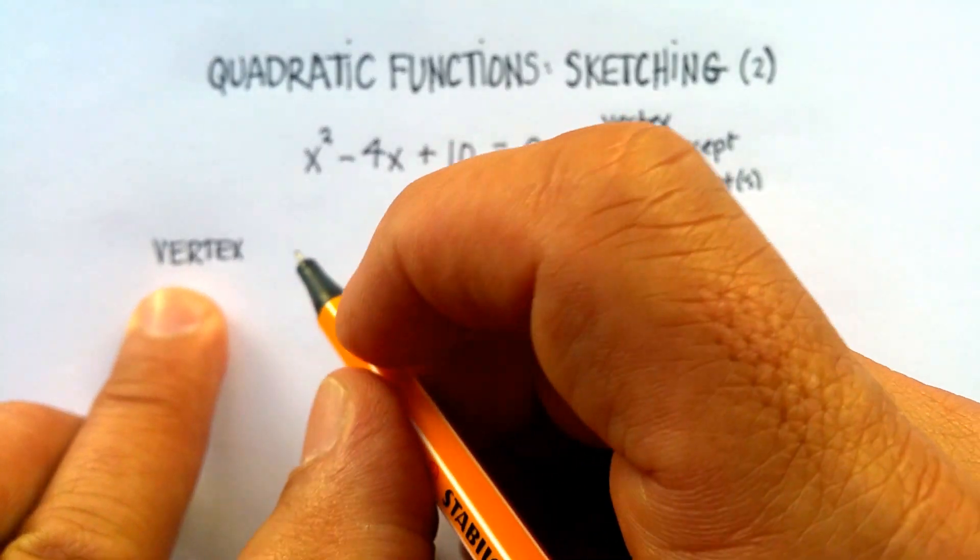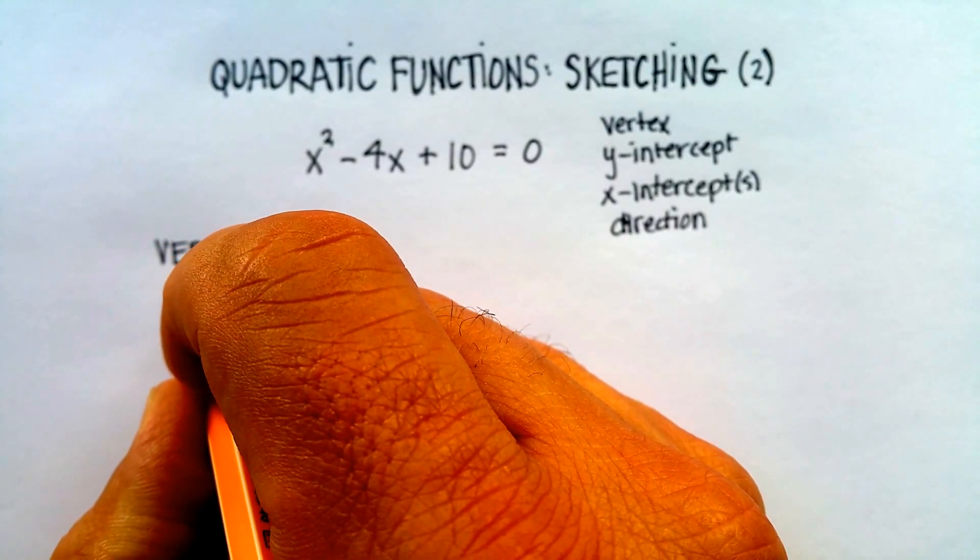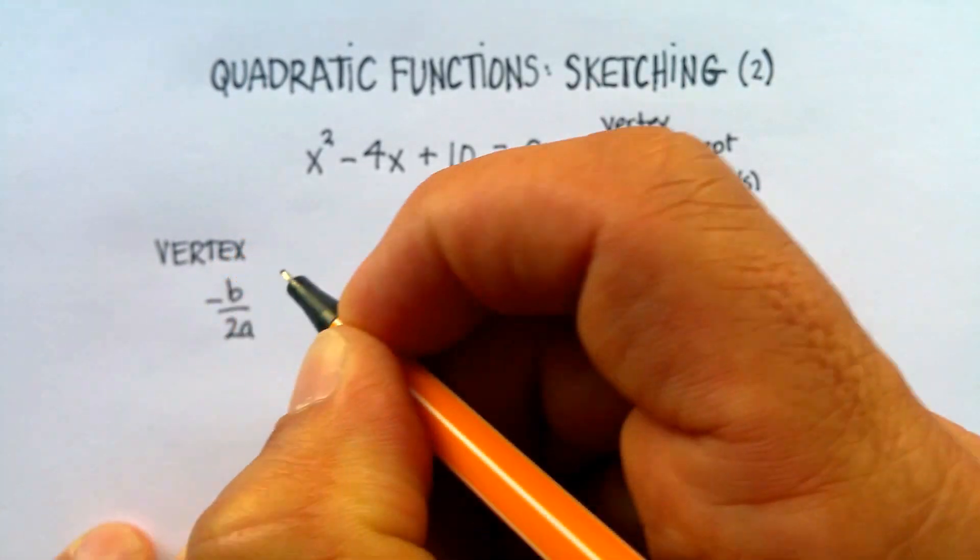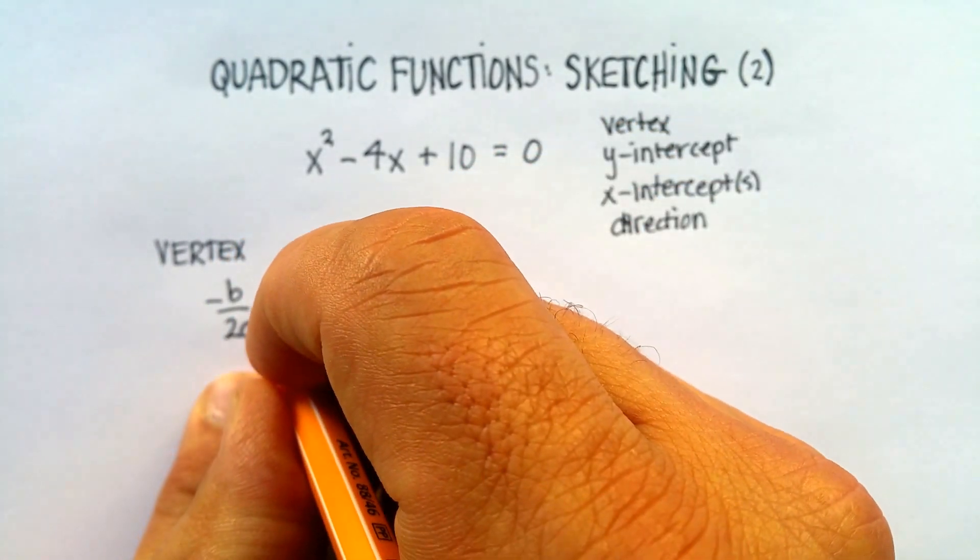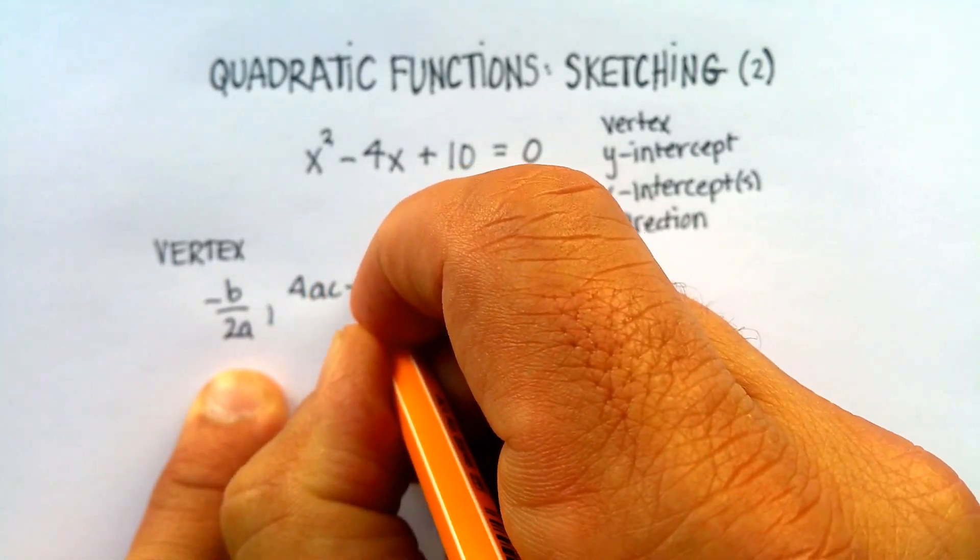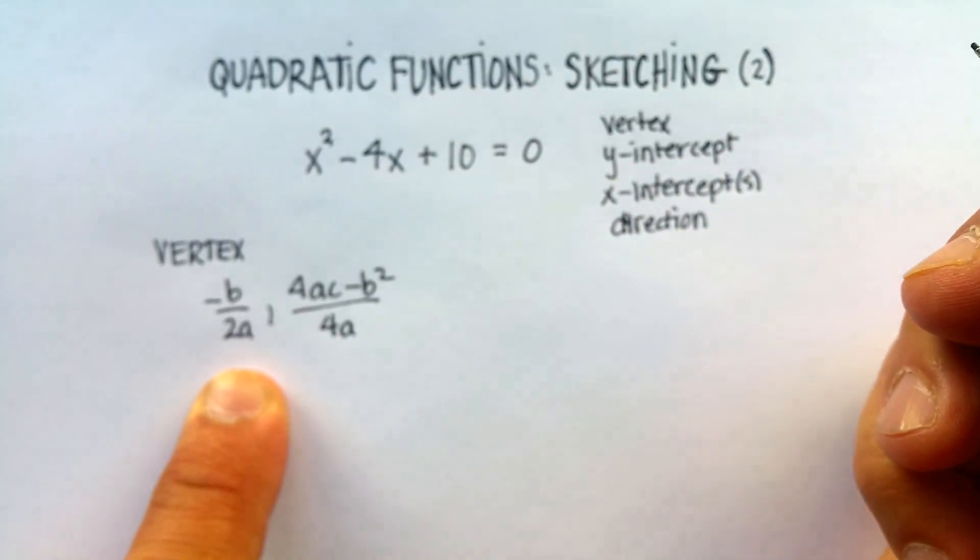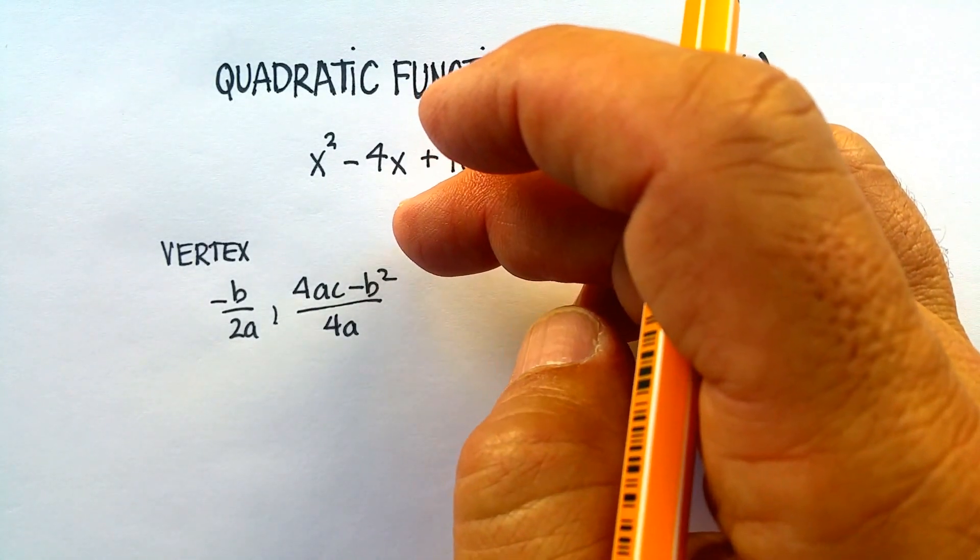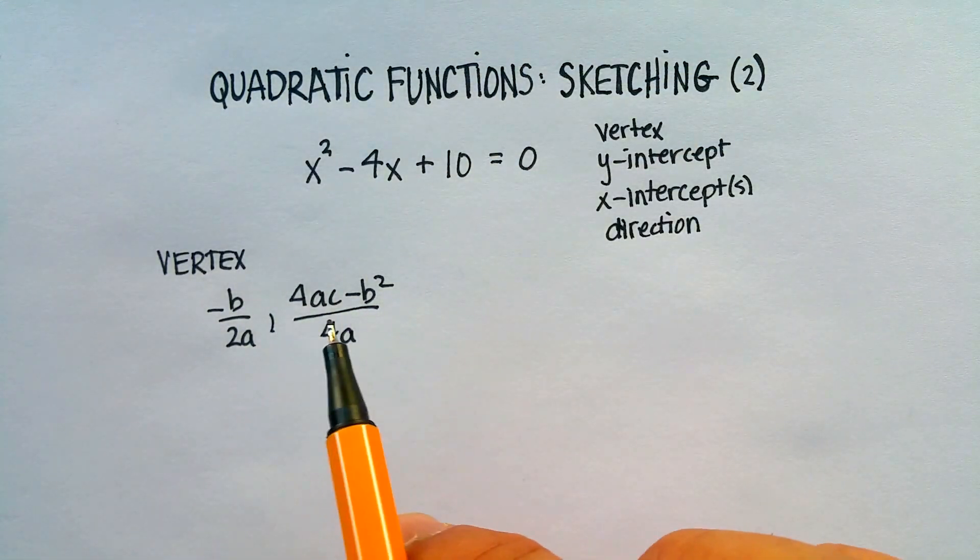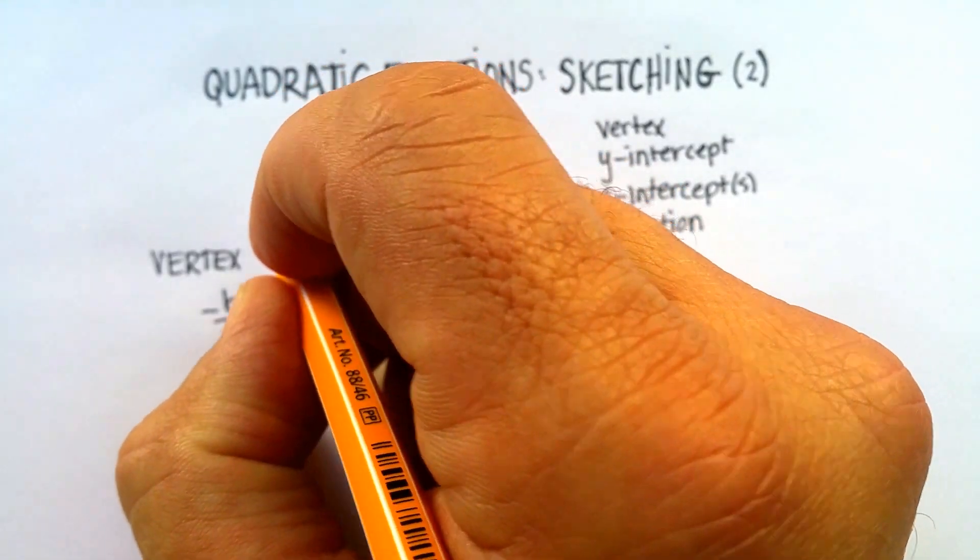In order to find the vertex, I need to know the vertex formula. The formula for a vertex is negative b over 2a, which will find the x value, and then 4ac minus b squared over 4a. This is begging a question: what are the a, the b, and the c?